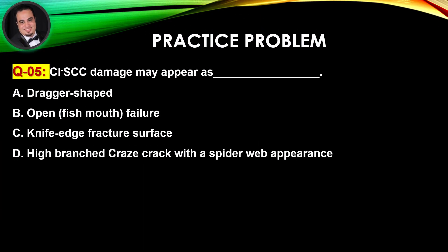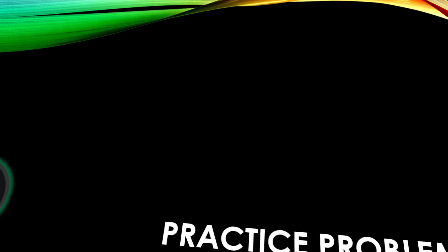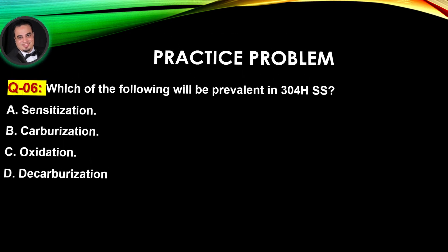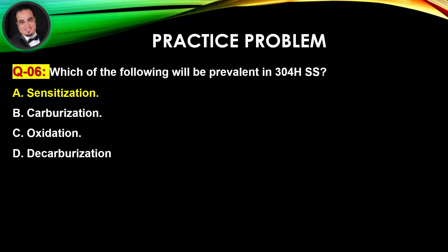Question number five: Chloride stress corrosion crack damage may appear as — Answer is D. Question number six: Which of the following will be prevalent in 304H stainless steel? Answer is A.